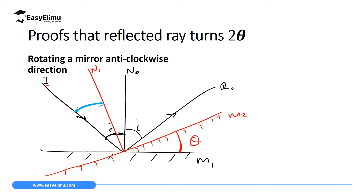Since the source of light is constant, the incident ray has not changed. The new angle of incidence will be less than the initial angle of incidence. The angle through which N has moved equals the angle through which the mirror was rotated, which is theta. So the new angle of incidence equals the whole angle i from the incident ray to N-naught, minus the angle from N1 to N-naught, which is theta. Therefore the new angle of incidence is i minus theta.